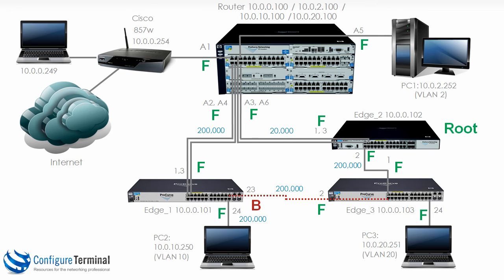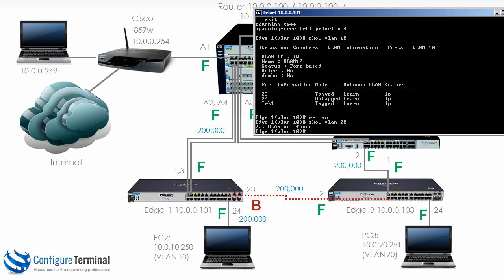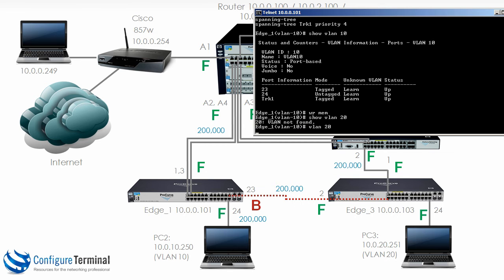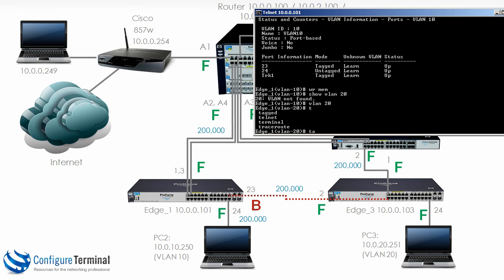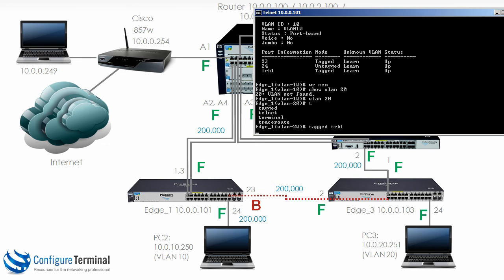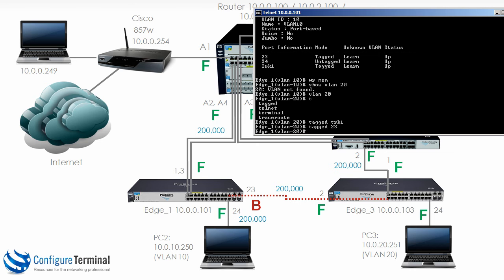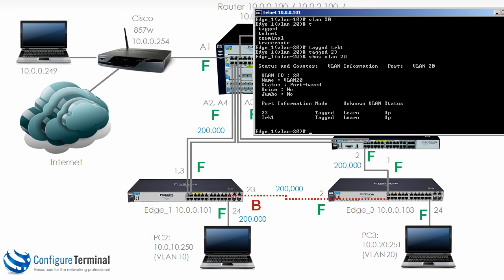Let's have a look at edge 1. On edge 1, create VLAN 20. We are going to tag this on TRK 1, and we are going to tag VLAN 20 on port 23. Typing show VLAN 20 shows it's tagged for port 23 and TRK 1. I'll save the config.